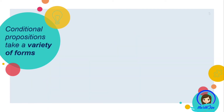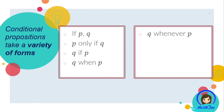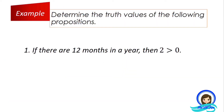Conditional propositions take a variety of forms. To better understand the truth table for conditional or implication, let us have some examples. Determine the truth values of the following propositions.